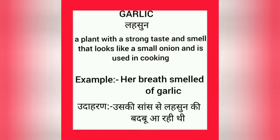Garlic is a plant with strong taste and smell that looks like a small onion and is used in cooking. For example, every breath is smelled of garlic, or garlic means that it was in the mouth of the buddhub.